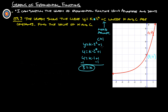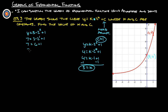So k is three and c is one. Writing the full equation: y equals three times two to the x plus one. Let's double-check by plugging in x equals one — we should get y equals seven. Three times two to the first plus one is three times two plus one, which is six plus one. Seven equals seven. We've confirmed our values of c and k.